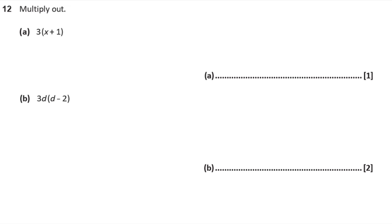Question 12. Multiply out three lots of (x plus one). Everything inside the bracket gets multiplied by three: three times x is 3x and three times one is 3, so the answer is 3x plus 3. For the second bracket, multiply everything by 3d: 3d times d is 3d squared, and 3d times minus 2 is minus 6d. So the answer is 3d squared minus 6d.